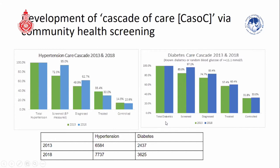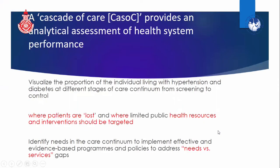The cascade of care visualizes the proportion of individuals living with hypertension and diabetes at different stages of the care continuum from screening to control, showing where patients are lost and where limited public health resources and interventions could be targeted. The cascade of care approach within HDSS can identify the care continuum to implement effective and evidence-based interventions according to need versus service gap.